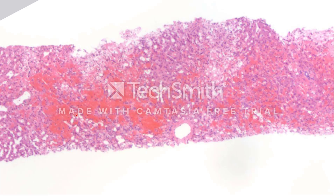This is liver, and it's somewhat hard to identify portal tracts, so I'll identify them for you. Here's a portal tract somewhere here, here's another portal tract somewhere here, and you'll notice that this blood that's accumulating is centered around the central veins, although it involves all three zones of the liver.